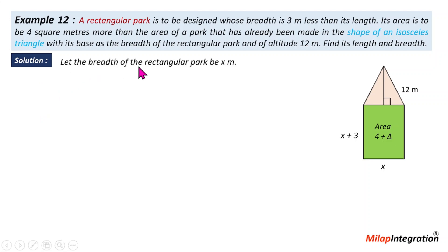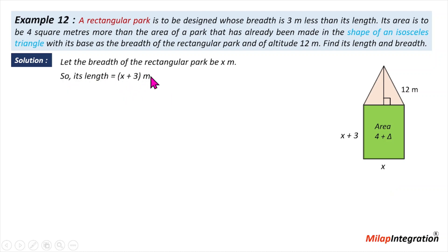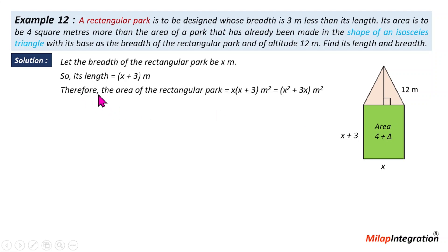Let the breadth of the rectangular park be x meters. Then its length will be x plus 3 meters. Therefore the area of the rectangular park is length into breadth, which gives us x(x+3), that is x² plus 3x.